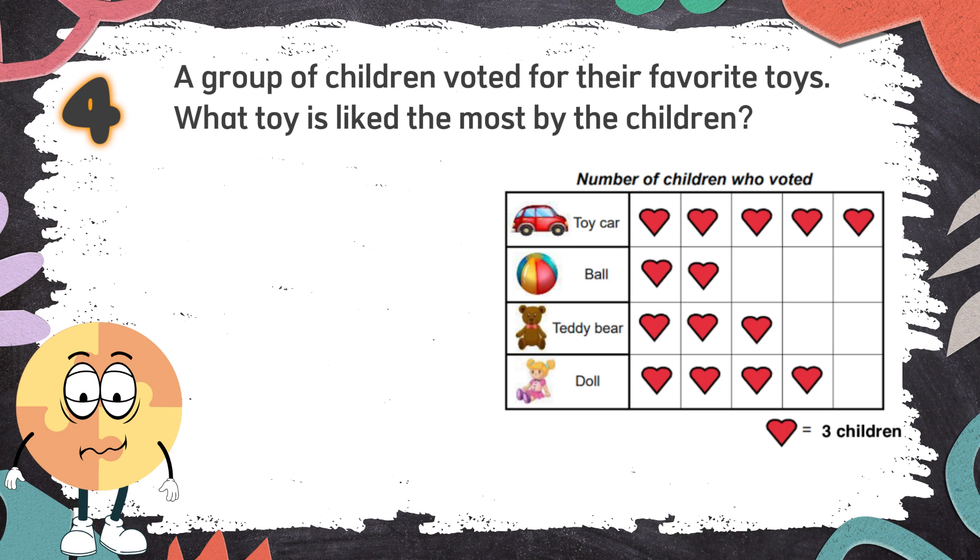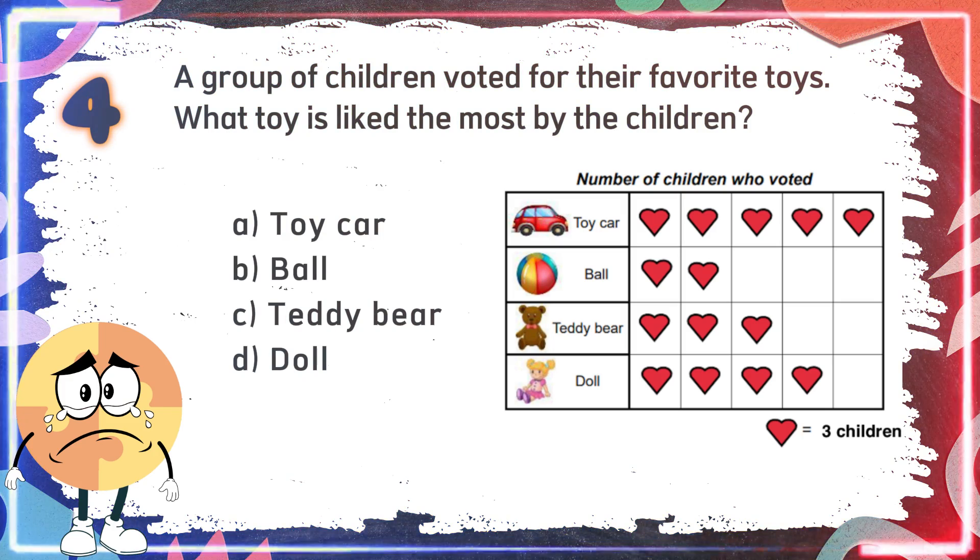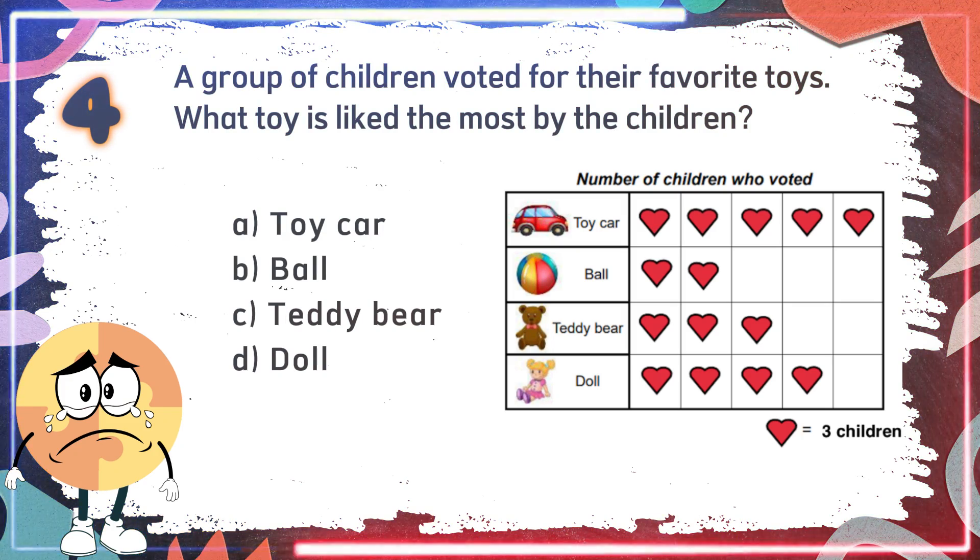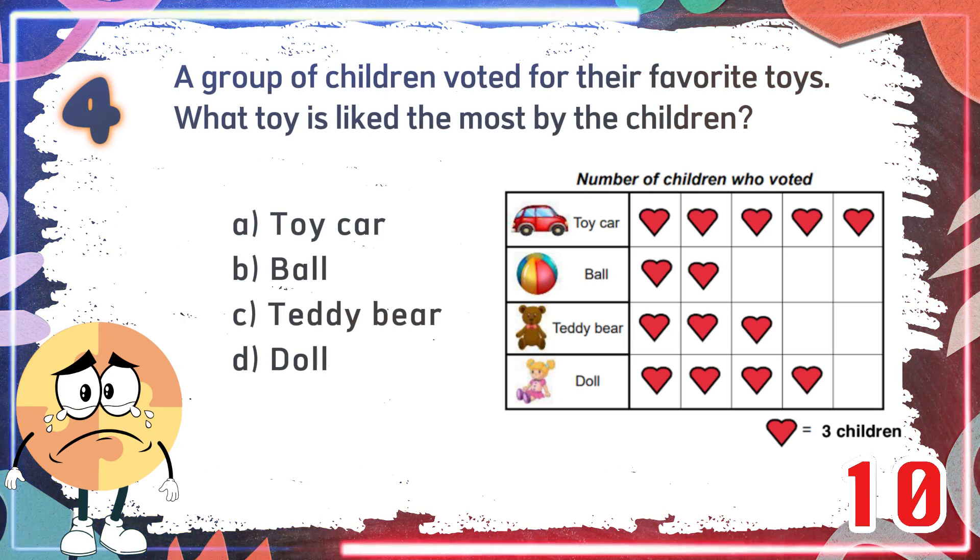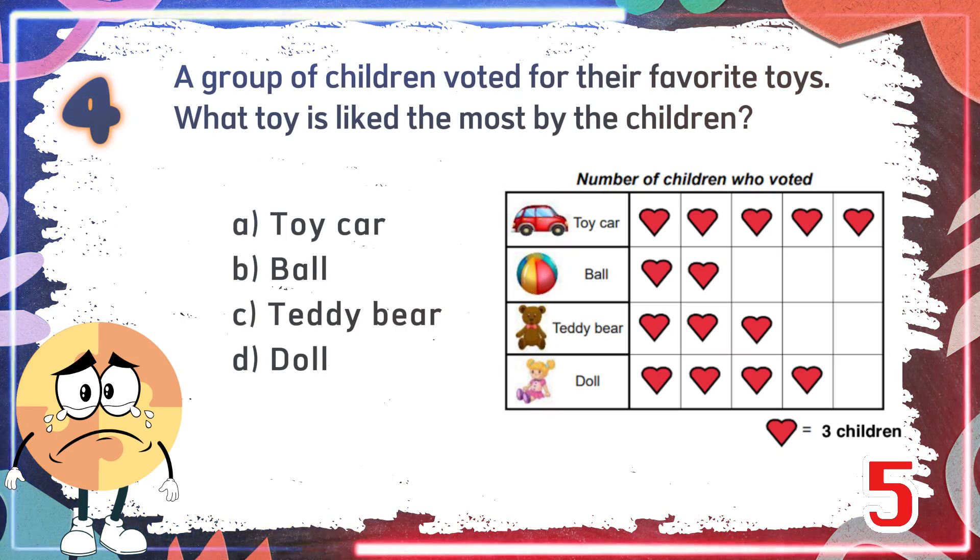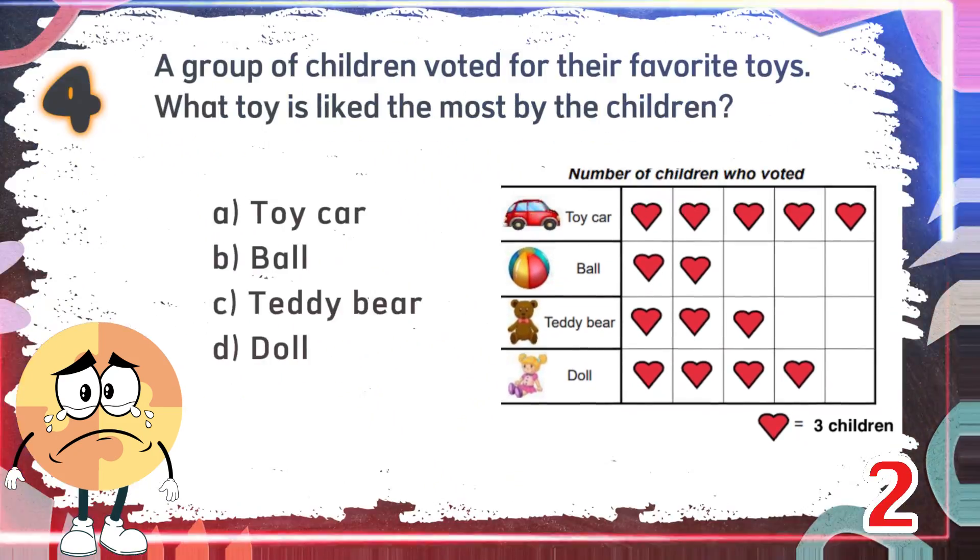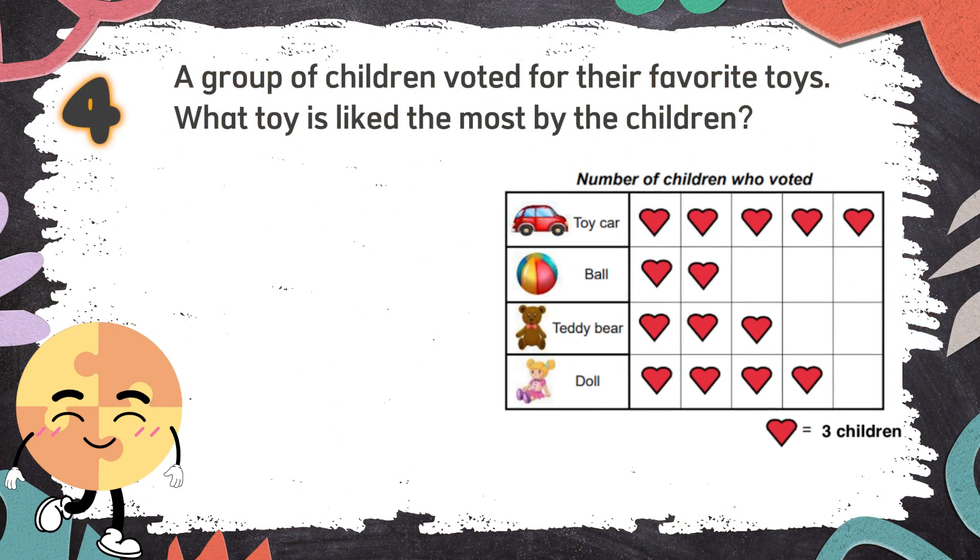Number 4: A group of children voted for their favorite toys. What toy is liked the most by the children? The choices are A, toy car, B, ball, C, teddy bear, D, doll. The correct answer is A, toy car.